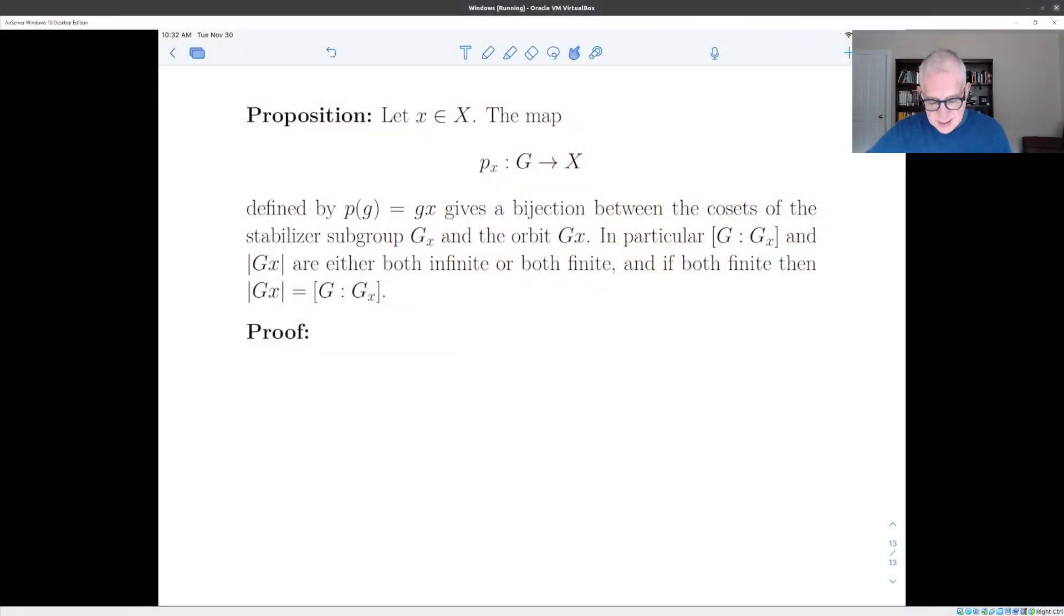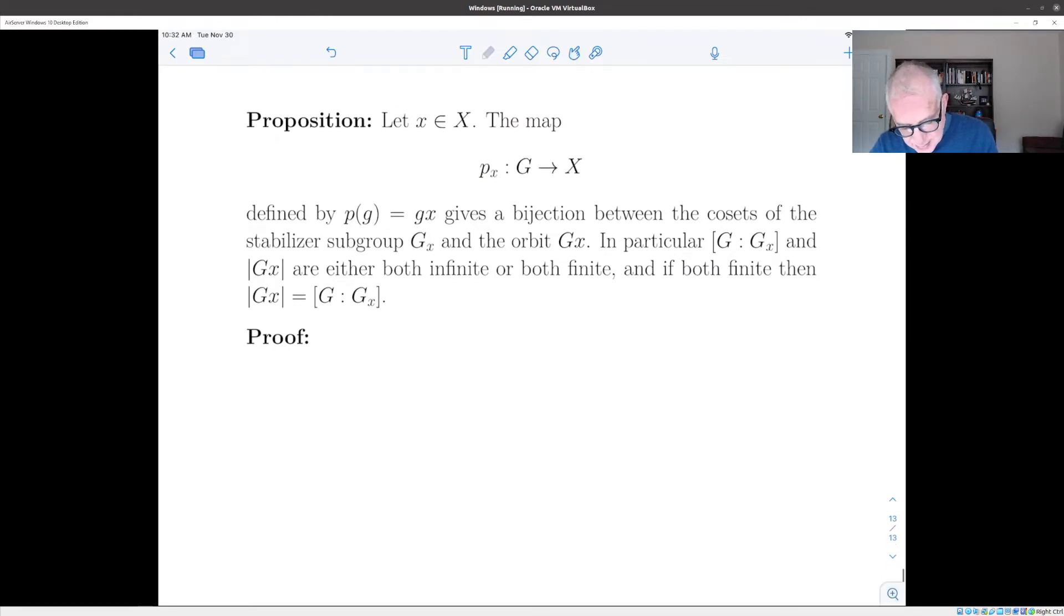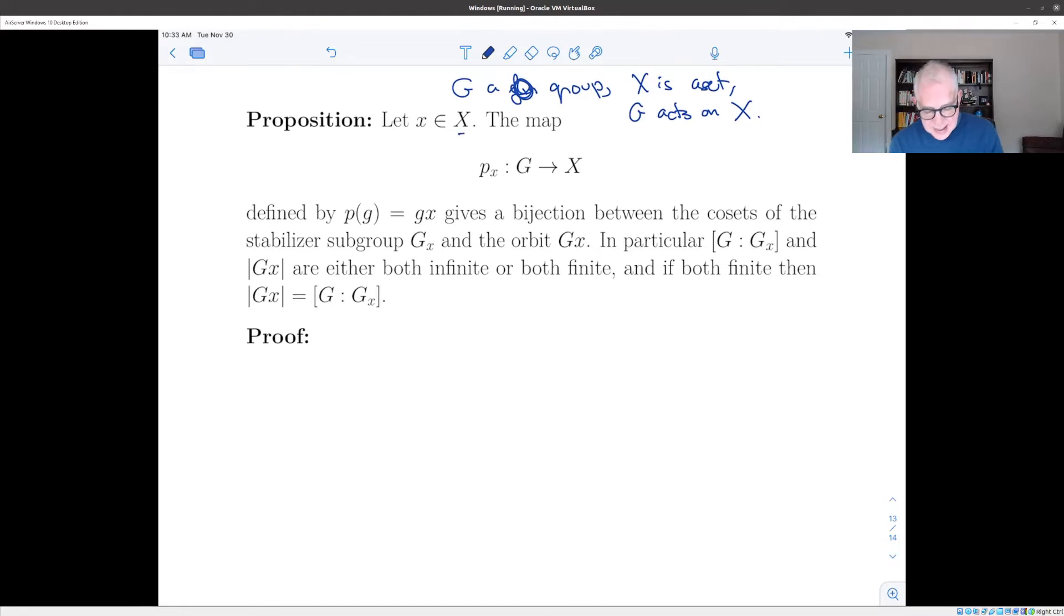So here's the situation. We have a group action. So we have G, the group, and X is a set, and G acts on X, as we've been assuming all along. And now we're going to choose an element x in the set X and consider the map, which sends G to X just by taking elements of G and applying them to that element x through the action.